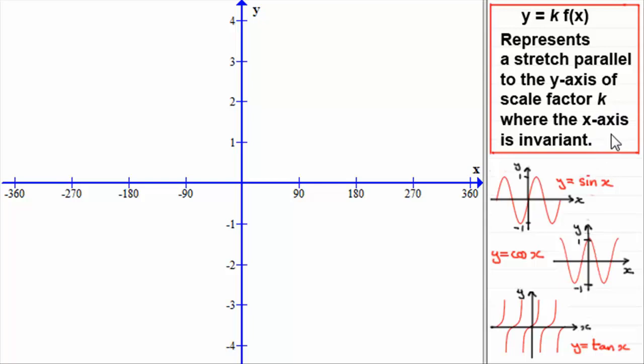To start this, I've got a set of axes going from minus 360 degrees to 360 degrees. If we look at the graph of y equals sin x, I've let f of x be sin x, then we're going to get the familiar graph. It goes from minus 1 to 1, peaks at 1 at 90 degrees and minus 270 degrees, and its lowest value of minus 1 is at minus 90 and 270 degrees.